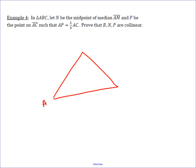We've got triangle ABC with median AM drawn in, which means those segments are equal. P is a point on AC such that AP is one-third of AC. So if this is A, then this is 2A, giving a ratio of 1 to 2.